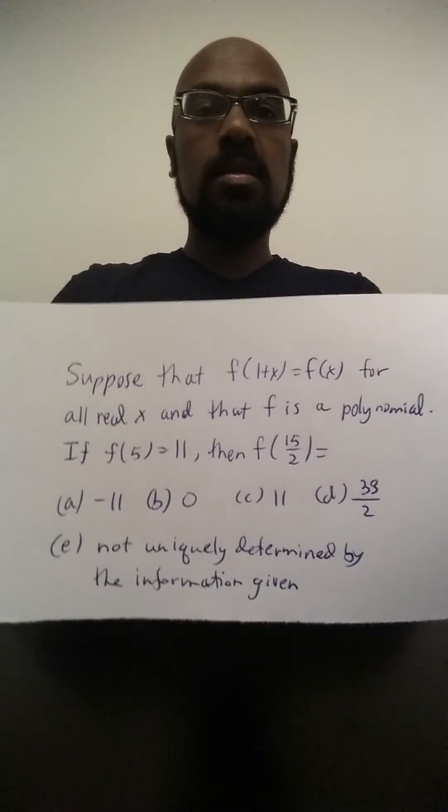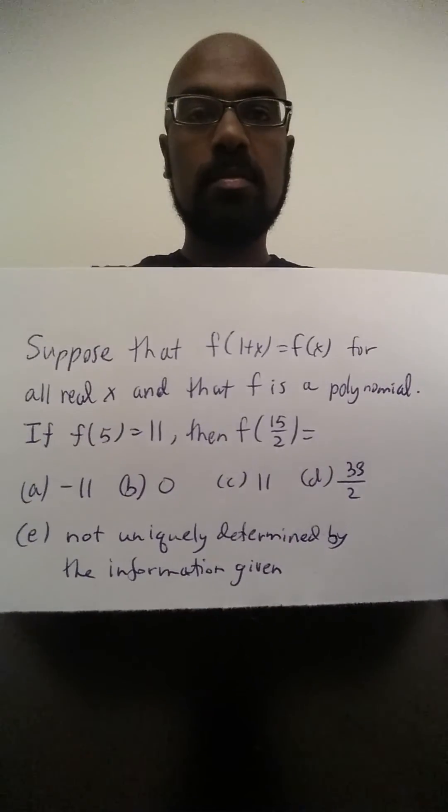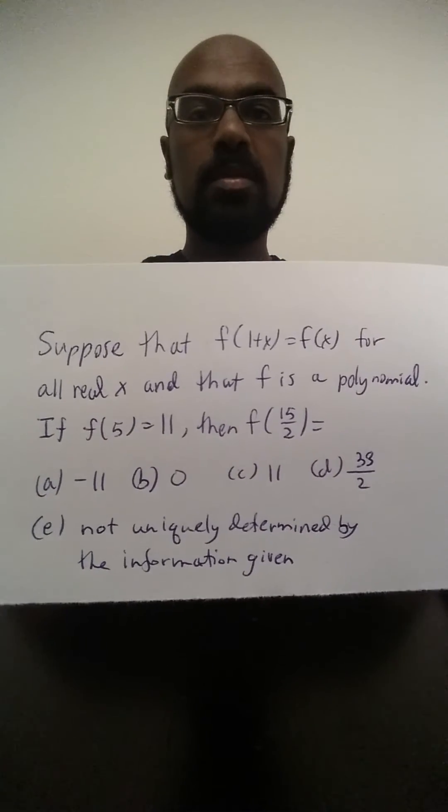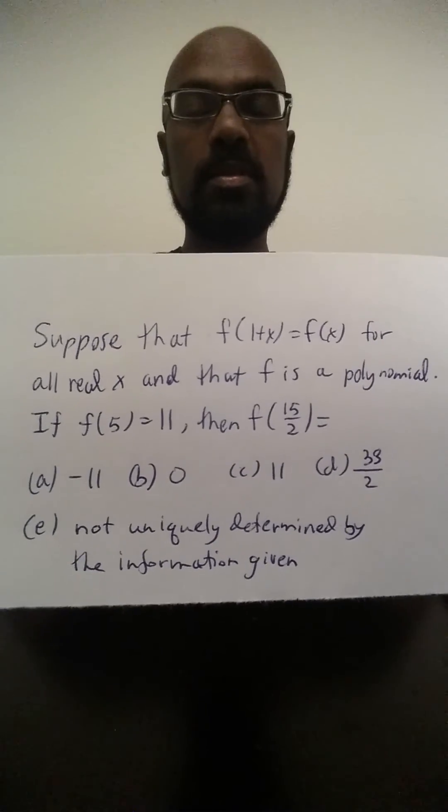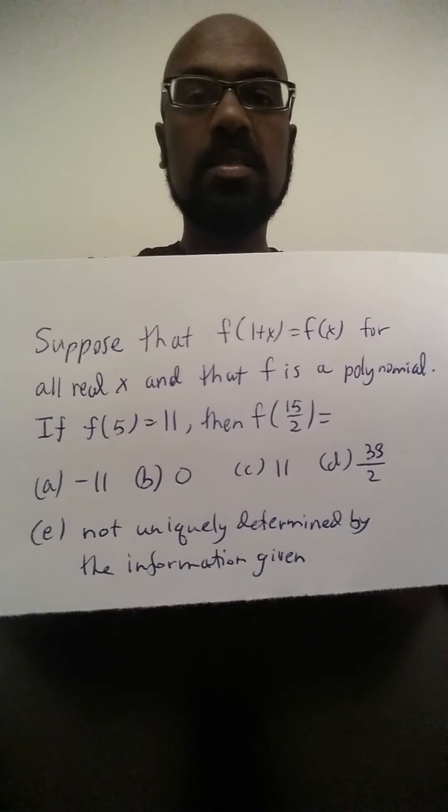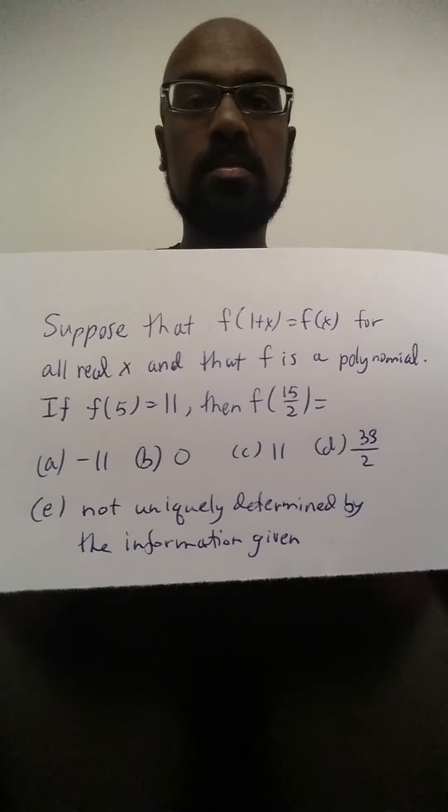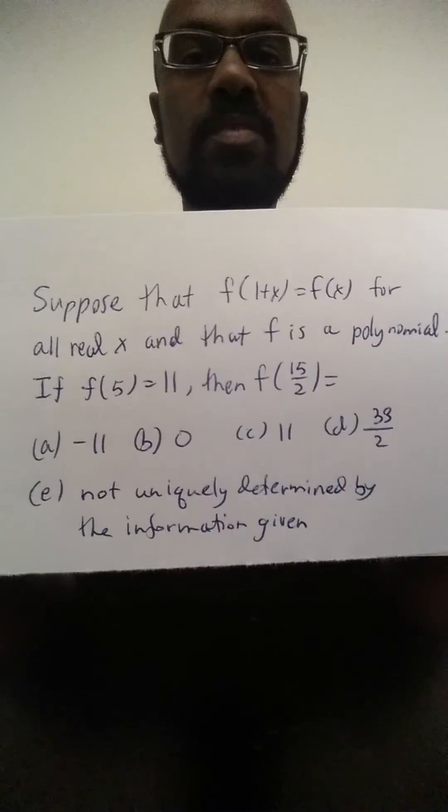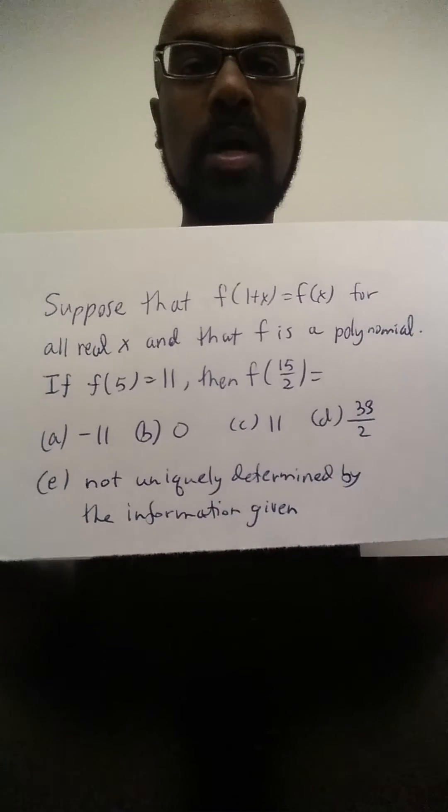If you shift that in the negative direction by one unit, it does not change. So what this means is that the polynomial that is given to us must actually be constant. And so if f of 5 is 11, then f of 15 halves is 11 as well.